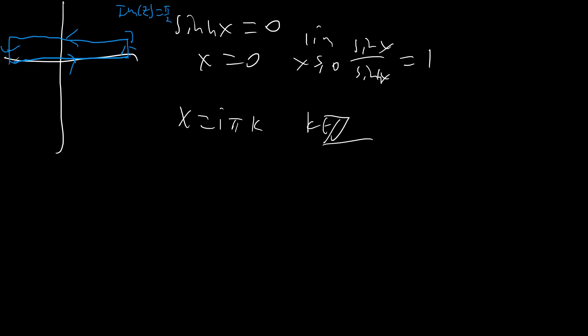So first off, the first thing we have to do is show that these outer integrals go to 0. So if we let z equal r plus iy, then dz equals idy, right? And so we're going to end up with the integral from y equals 0 to y equals pi over 2 of sine of z, which is sine of r plus iy.